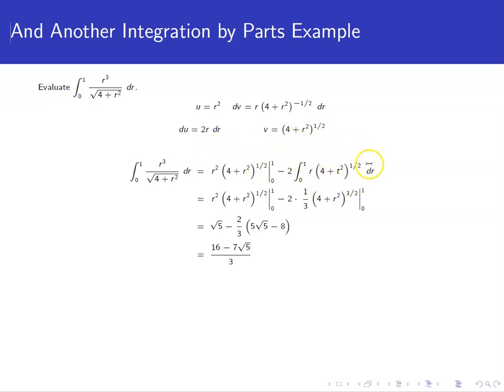We've already done an anti-derivative. We can do this anti-derivative using a u substitution. It'll be 1 third 4 plus r squared to the 3 halves. You can check that. But we need to evaluate both of these from 0 to 1.